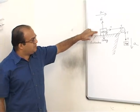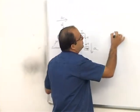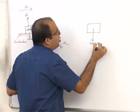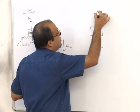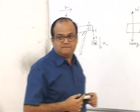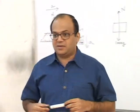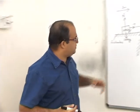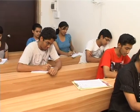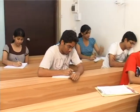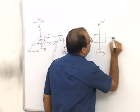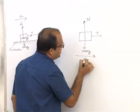Now we draw the free body diagram of the 1000 kg block. The 1000 kg weight acts downward and is balanced by the normal reaction. Whenever a body is resting on a surface, the normal reaction acts perpendicular to the surface. The weight acts vertically downward, normal reaction acts perpendicular to the surface, and since this body is connected by a string, tension acts along the string. The acceleration is in the rightward direction.